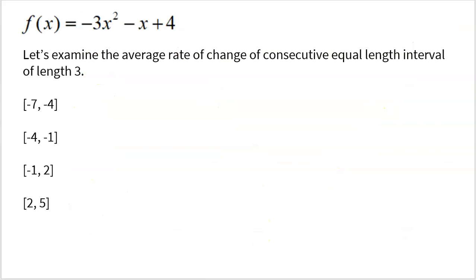Now let's do the exact same thing, but with no graph — just a function. f(x) = negative 3x squared minus x plus 4. We're going to look at consecutive equal length intervals of length 3: negative 7 to negative 4, negative 4 to negative 1, negative 1 to 2, and 2 to 5. Every one of these intervals is consecutive and equal length of 3.